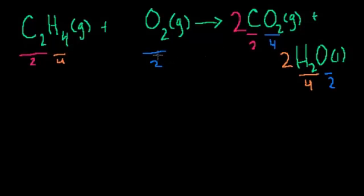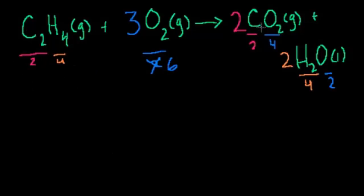So how do I make this 2 into 6? I want 6 oxygens on the left-hand side as well. If I put a 3 out here, now I have 6 oxygens and my equation has been balanced. I have 2 carbons on this side, 2 carbons on that side, 4 hydrogens on this side, 4 hydrogens on this side, 6 oxygens on this side, and 4 plus 2 — 6 oxygens on that side.